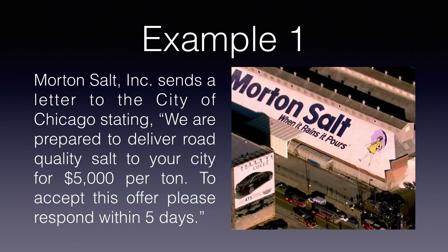Example 1. Here's the fact pattern: Morton Salt, Inc. sends a letter to the City of Chicago stating, 'We are prepared to deliver road quality salt to your city for $5,000 per ton. To accept this offer, please respond within five days.' Take a minute and think about whether you would want to deal with this in a smushed IRAC—just one IRAC for all of offer—or whether you want to separate that out into three separate IRACs to determine whether there's an offer here.